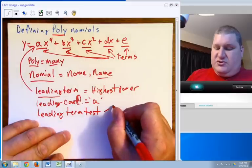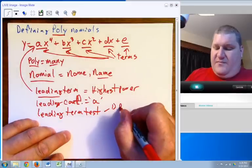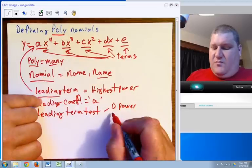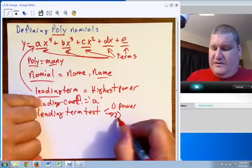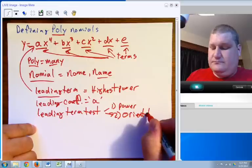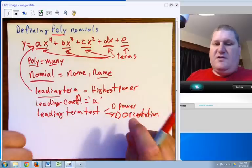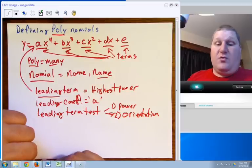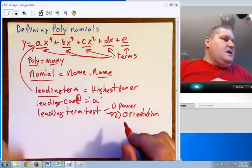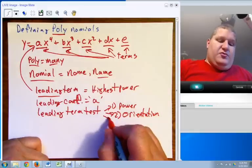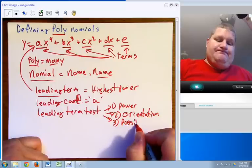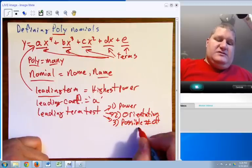The leading term test tells you a couple things. First of all, it tells you, number one, the power. So in this case, we have a fourth power. The leading term will also give you the leading coefficient. It will give you the graph's orientation. So it will give you the leading power and it will also give you the orientation. Both of those two things are very, very important.